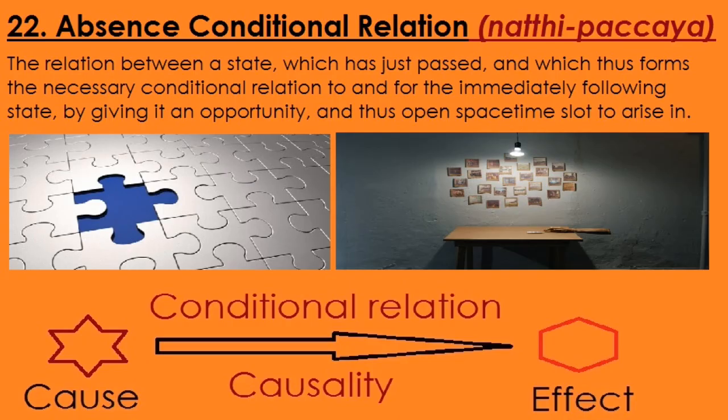Number 22 is the absence conditional relation — Natthi Pachaya. This is the relation between a state which has just passed and which thus forms the necessary conditional relation for the immediately following state, by giving it an opportunity — opening a space-time slot for it to arise in. For the effect to arise, something has to disappear, something has to be absent. If there is this hole in the brick, something new can fall into it. The cause has to be absent in order for the effect to come.